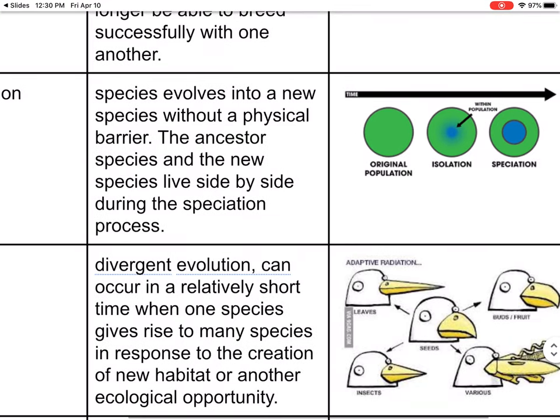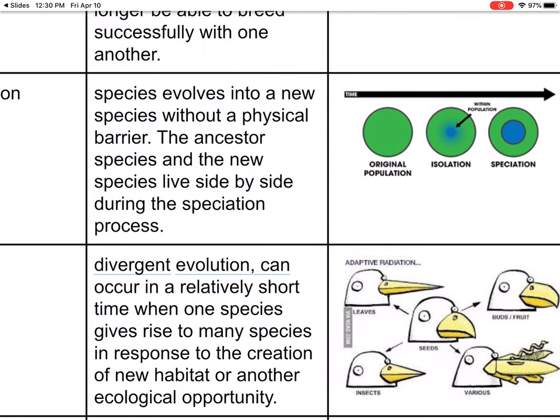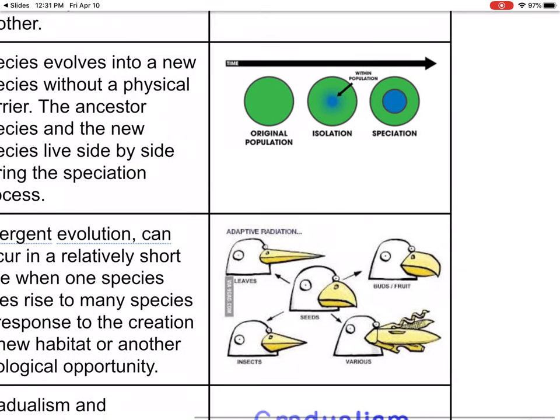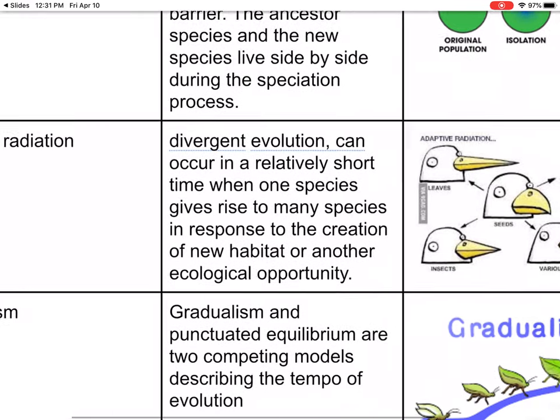Sympatric speciation: species evolve into a new species without a physical barrier. The ancestor species and the new species live side by side during this process. There's no geographical separation — I think it has to do with how close they are to each other, so they're breeding with each other, which is why you probably have two different ones.